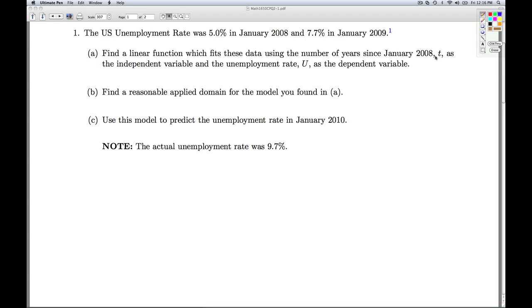t is the number of years since January 2008. So in January 2008, that's zero years since January 2008. So this gives us t equals zero. At that point, the unemployment rate was 5%. So we're going to let u equal 5.